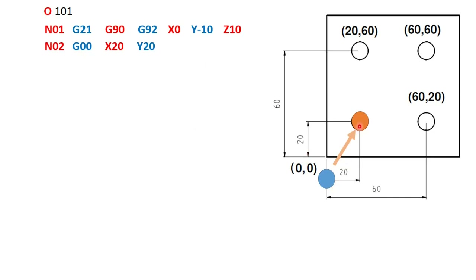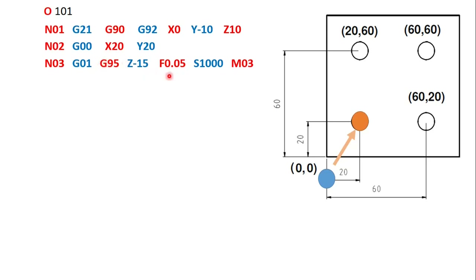Now the drilling operation begins. G01 is linear interpolation — the tool moves slowly into the workpiece. G95 defines the feed rate in millimeters per revolution, set to 0.05. S1000 is the spindle speed at 1000 RPM, and M03 starts the spindle in the clockwise direction. The tool goes to Z minus 15 — drilling 15mm deep, which exceeds the 10mm workpiece depth to ensure a complete through-hole.